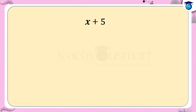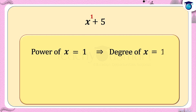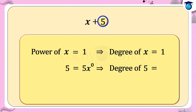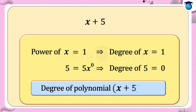In x + 5, the first term is x. The power of x is 1, therefore the degree of x is 1. The second term is 5, which can be written as 5x⁰, so the degree of 5 is 0. Therefore, the degree of the polynomial x + 5 is 1.